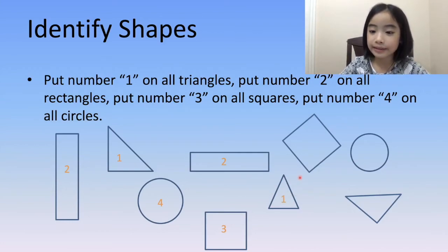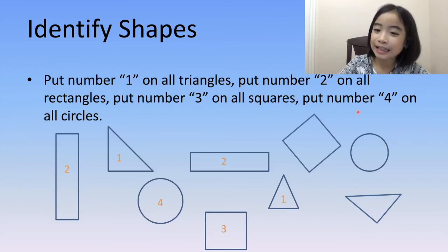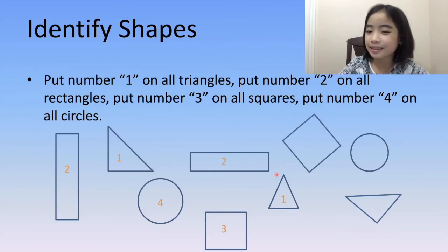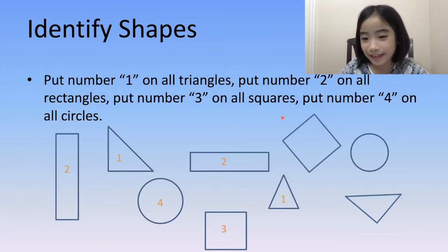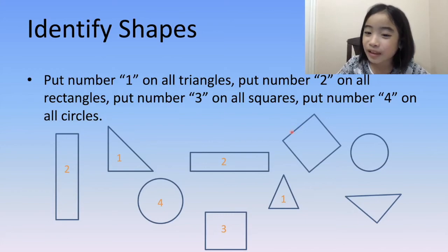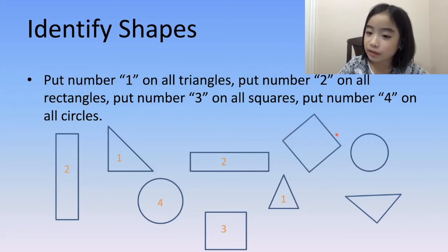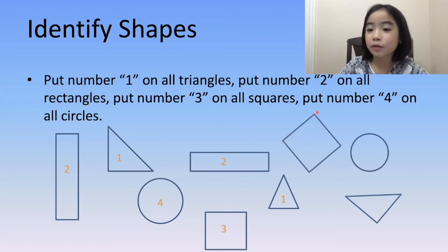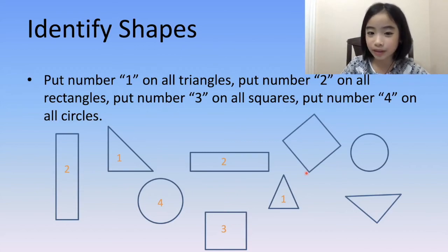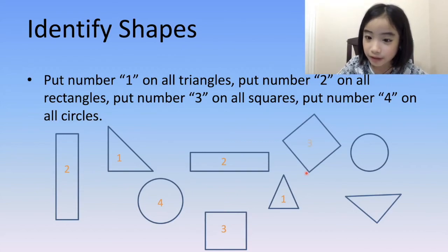Now, let's look at this shape over here — it does look a little bit funny, but we'll figure it out. It has four equal sides and four corners. So, this is a square. Let's put the number three on the square.